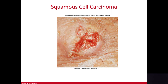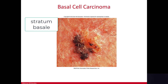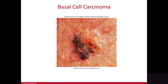Squamous cell carcinoma can metastasize to the lymph glands very easily if left untreated, but it usually responds well to surgical removal. Next is basal cell carcinoma, the most common type of skin cancer. It originates in the stratum basale and involves both the dermis and the epidermis. It usually affects sun-exposed areas just like squamous cell carcinoma, but unlike squamous cell carcinoma, basal cell carcinoma does not metastasize, making it a bit easier to treat.